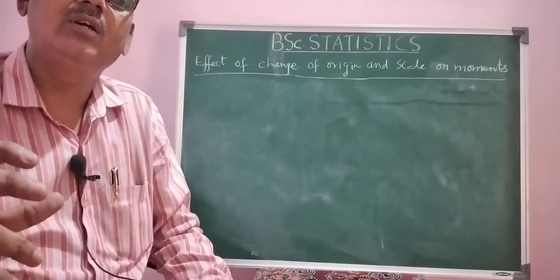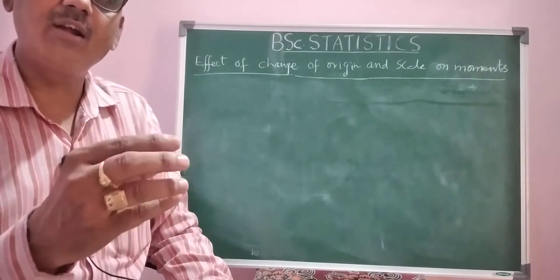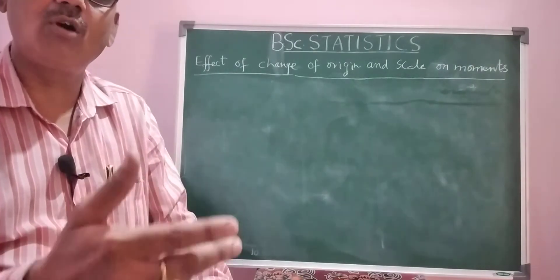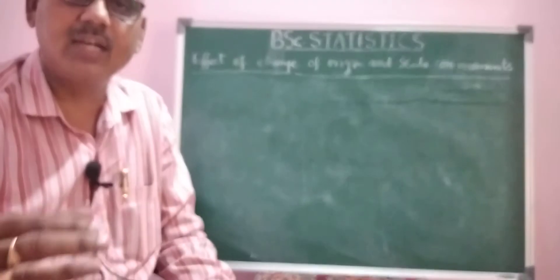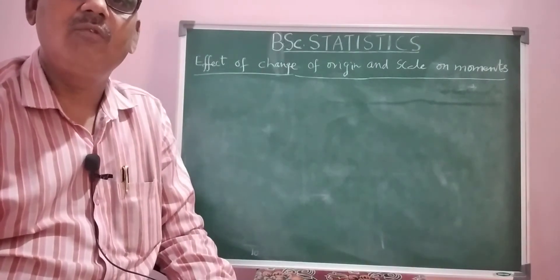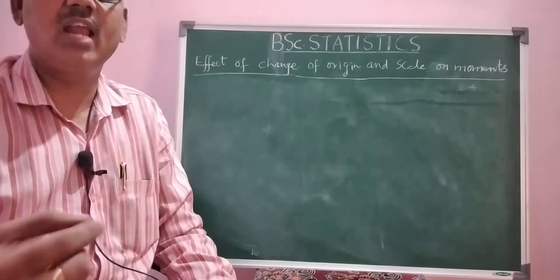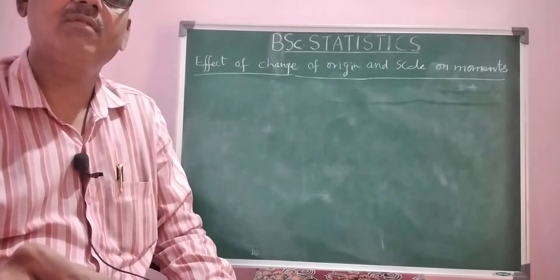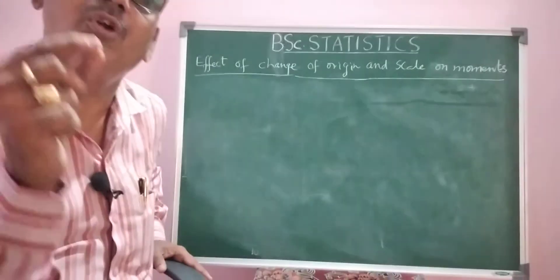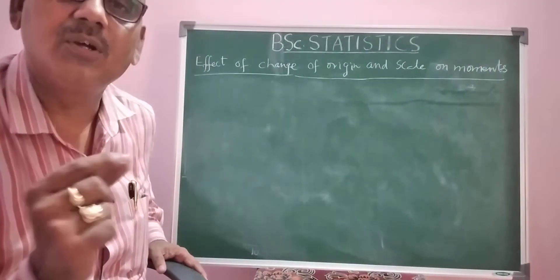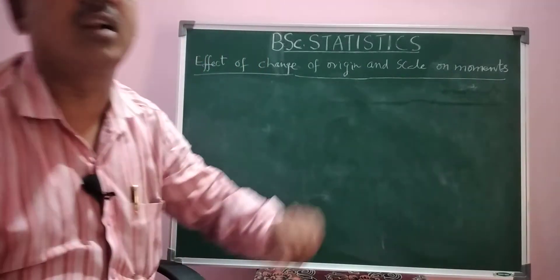I explained this by taking a variable x, subtracting a which indicates shifting the origin — that is x minus a — and considering h, so that (x minus a) divided by h indicates both shifting the origin and scale. If you divide by a number, the scale is shifted; if you subtract a number from all values, the origin is shifted.